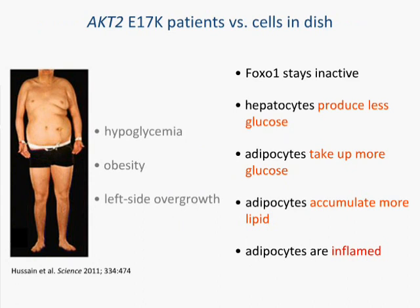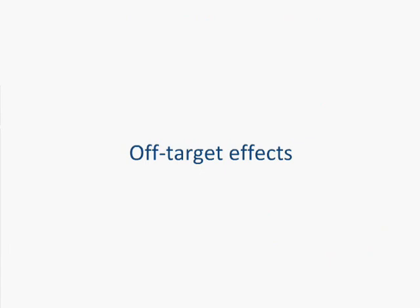To summarize what we found with this study of AKT2: in AKT2 E17K patients, we found that FOXO1 stays inactive, the hepatocytes produce less glucose, adipocytes take up more glucose, adipocytes accumulate more lipid, and the interesting new finding was that the adipocytes appear inflamed. Of course, anyone using a genome editing tool that creates double-strand breaks in the genome will be particularly interested in what might be the off-target effects — where else it might bind in the genome and create mutations.